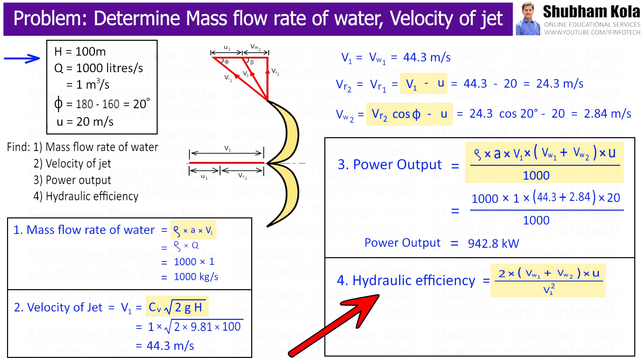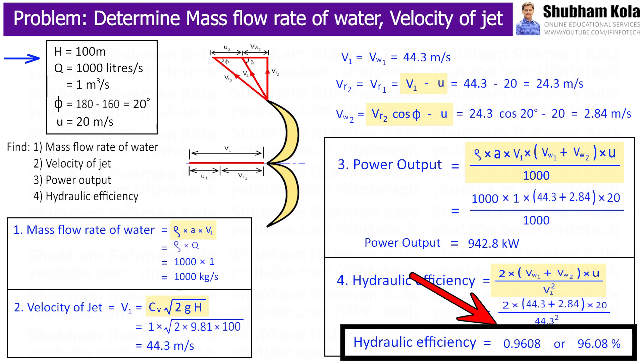Also, to calculate hydraulic efficiency of pelton wheel turbine, I will use this formula. So here I will put all these values, and by calculating this, we will get hydraulic efficiency 0.9608, or 96.08%.